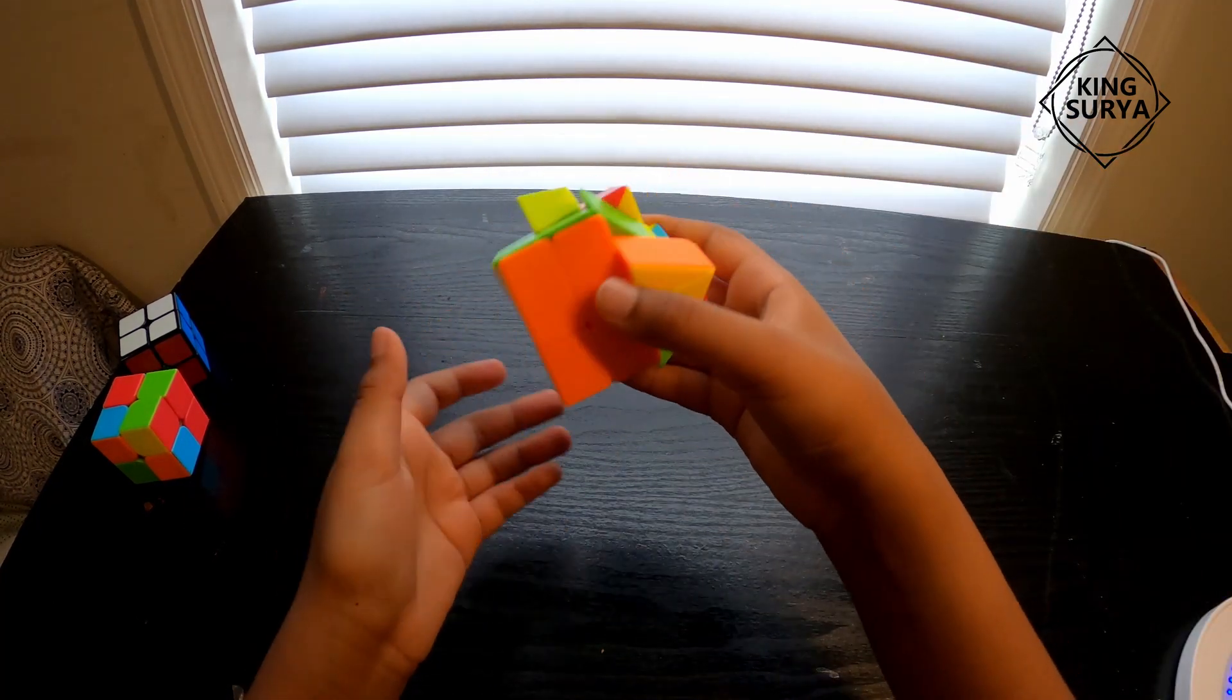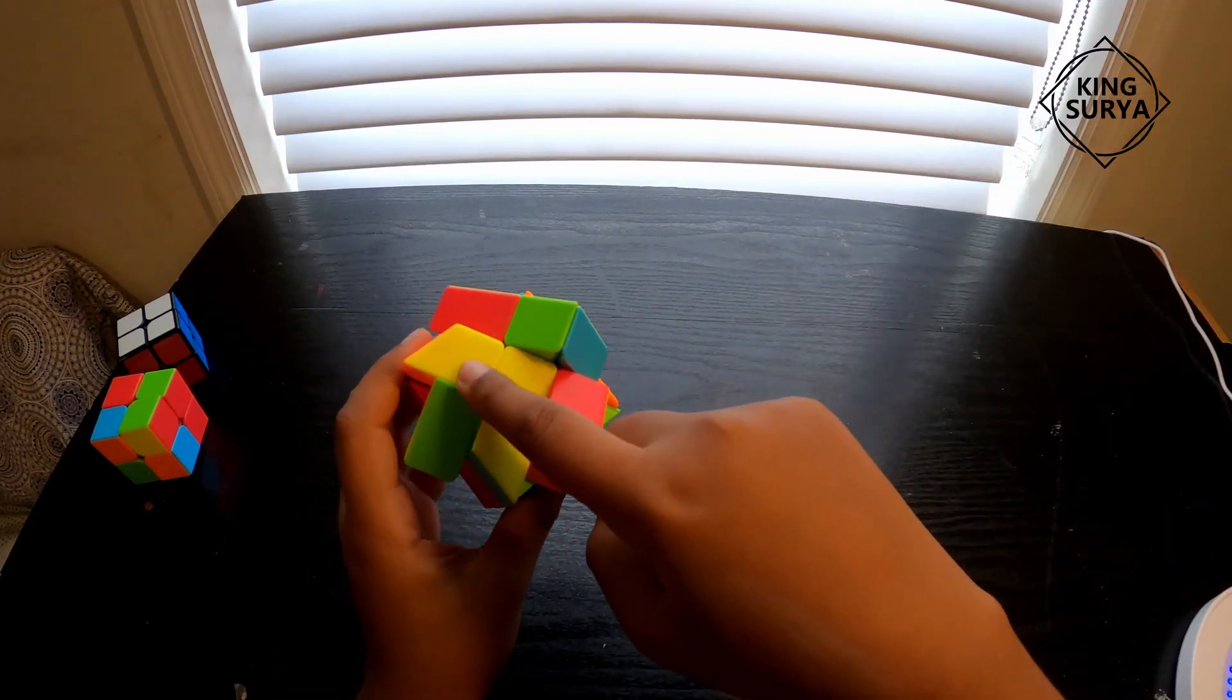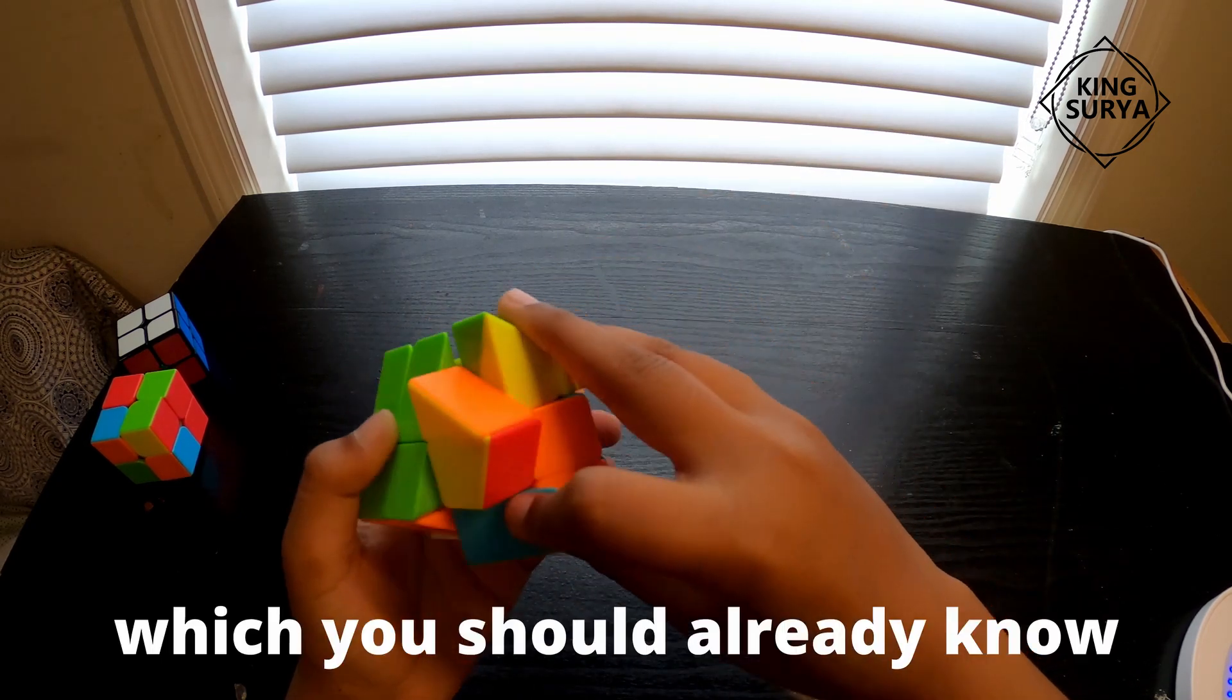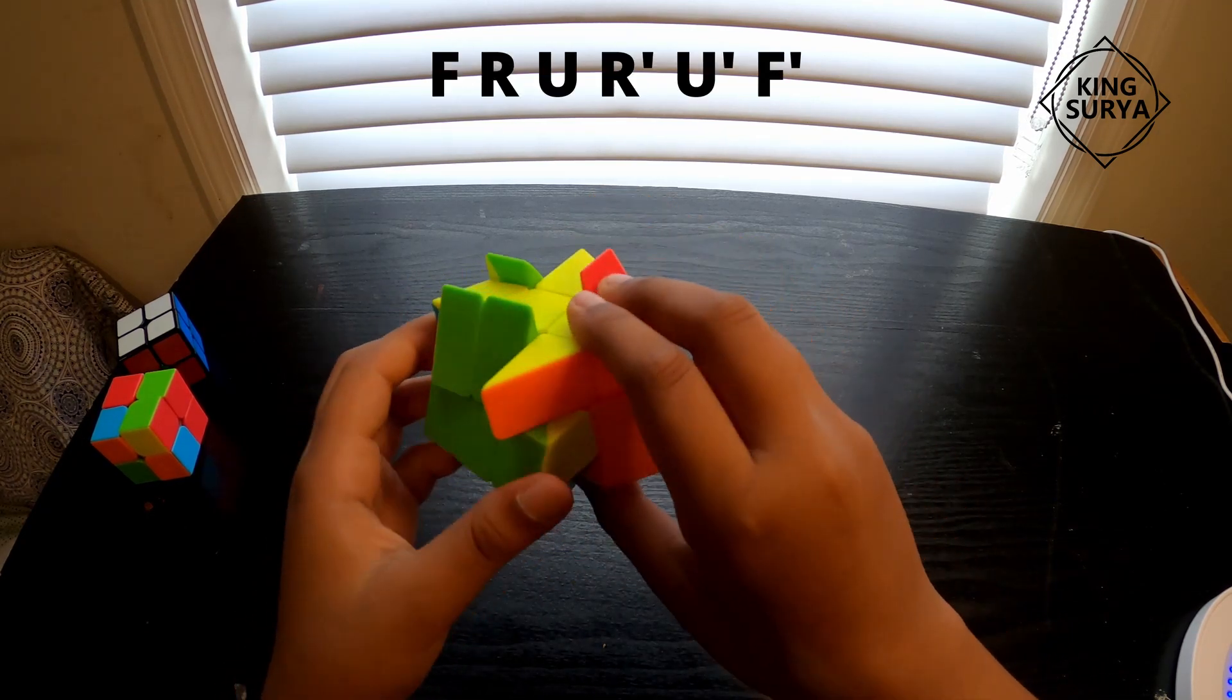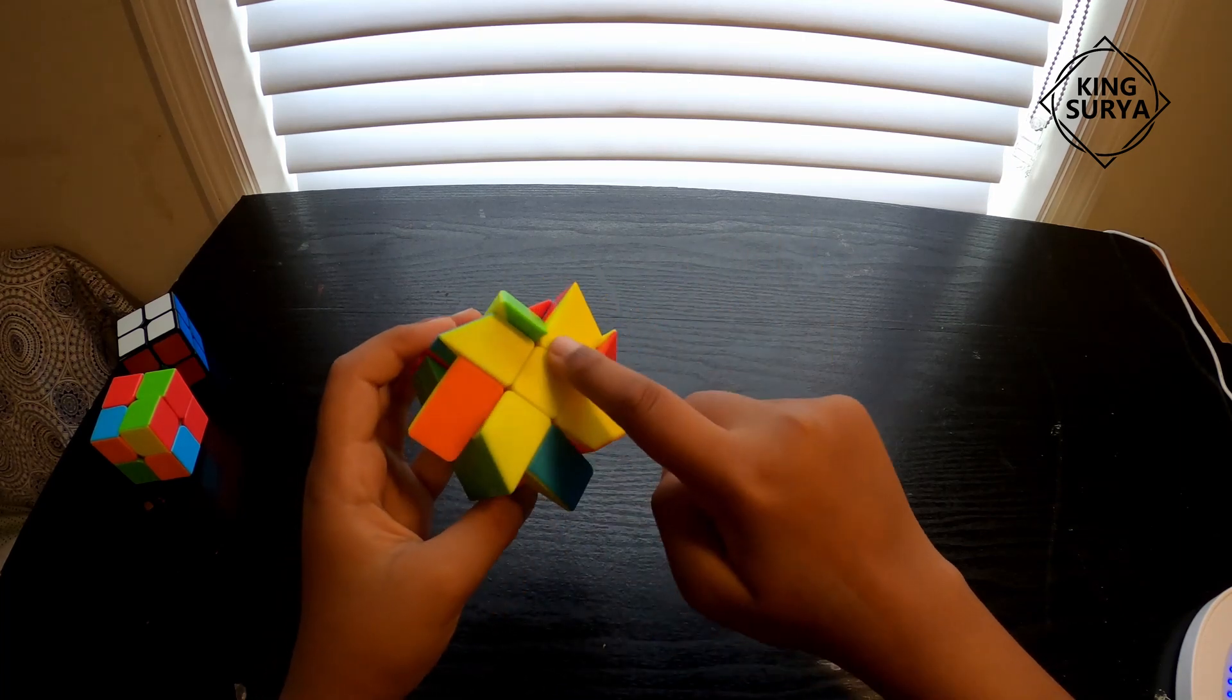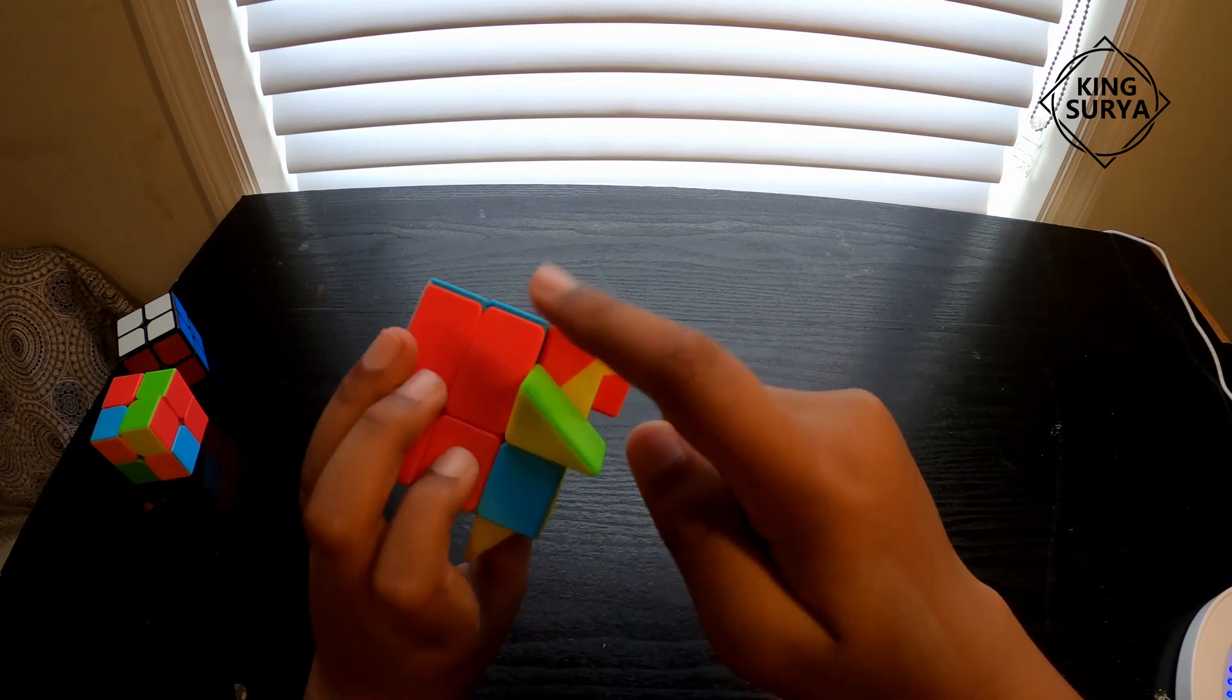Now we have two-thirds of the whole cube solved and you're going to be moving on to the last layer. First you're going to want to make a cross, which you already know from three by three. You just need to do the F R U F algorithm. If you don't know that, there's the algorithm. You will get this cross shape.